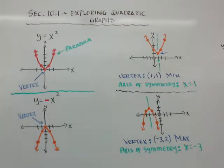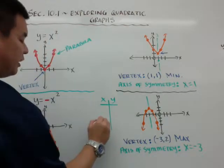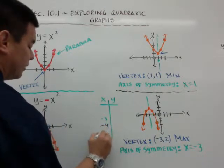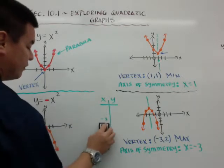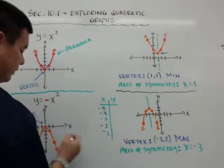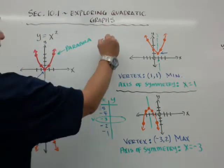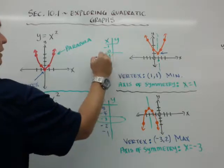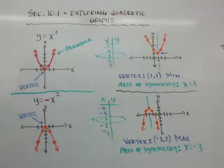Just for future reference, when we start doing graphs in section 10.2, when you do your xy table, what you want to use is this axis of symmetry as your middle number, because that's going to be your vertex. Then you go 2 up and 2 down. So in this case it would go negative 5, negative 4, negative 3, negative 2, negative 1. Because it's x equals 1, I'll put 1 in the middle, then 2, 3, 0, negative 1. This gives you 5 points on your graph — the vertex, then one to the left, one to the right, another one to the left, and another one to the right.